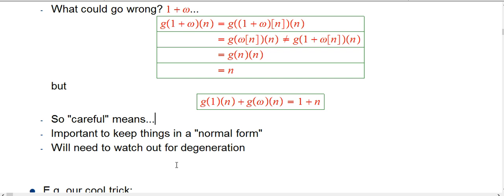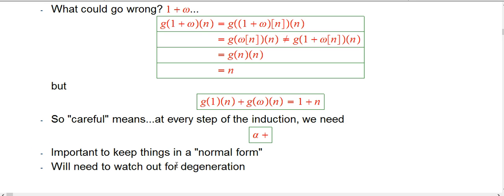Here's the deal. Careful means that at every step of the inductive proof, not just for the beta you're interested in right at the moment, in every step of the induction, we need alpha plus beta, the nth term of the fundamental sequence for that, to be alpha left alone plus beta fundamental sequence. You can do that by keeping things in a normal form. Never writing things as like one plus omega. Smaller plus bigger with the smaller on the left is the bad thing.